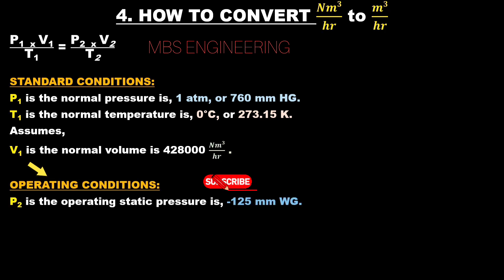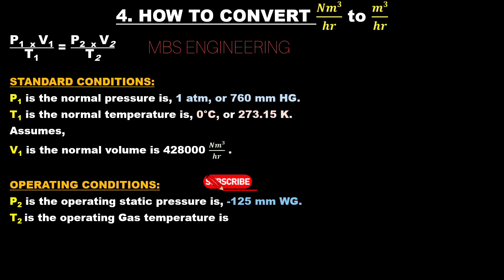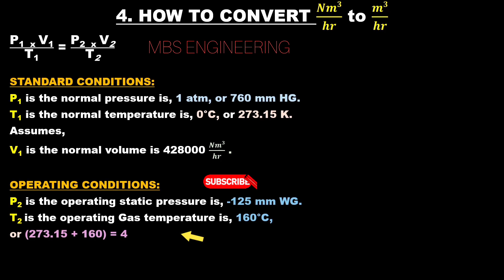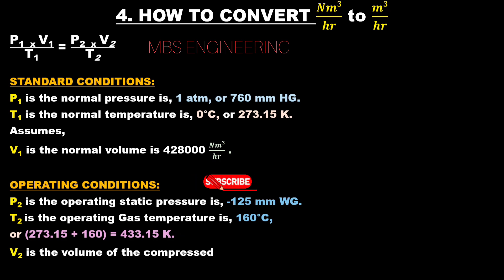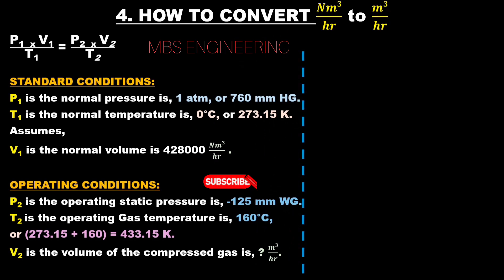The operating conditions are: P2 is the operating gas pressure of minus 125 mm of water column. T2 is the operating gas temperature of 160 degrees Celsius, or 273.15 plus 160, giving an operating temperature of 433.15 Kelvin. V2 is the volume of the compressed gas in m³/hr, which we need to calculate.